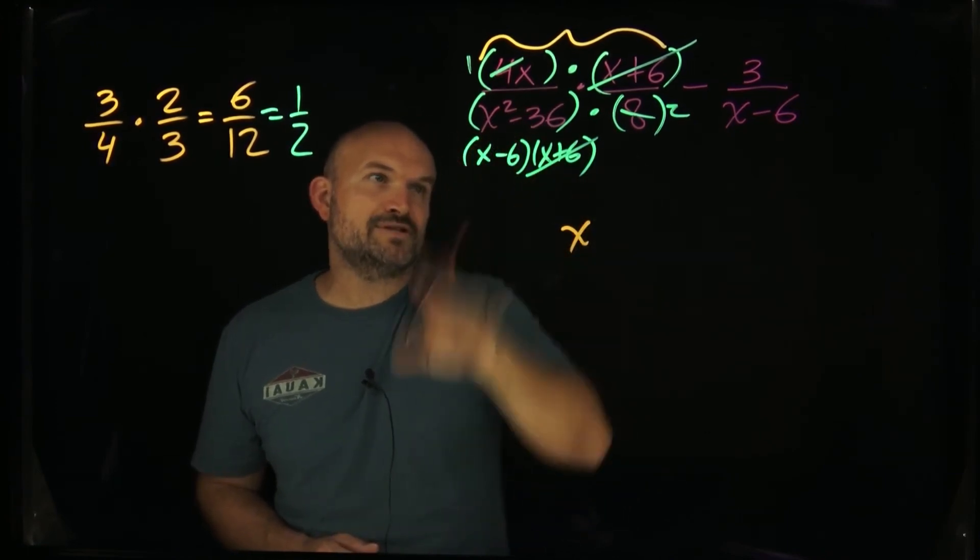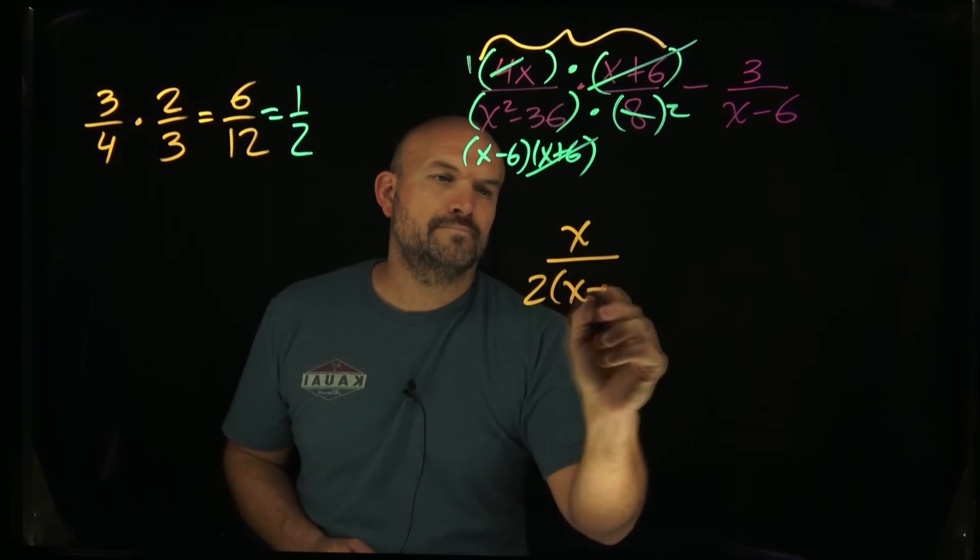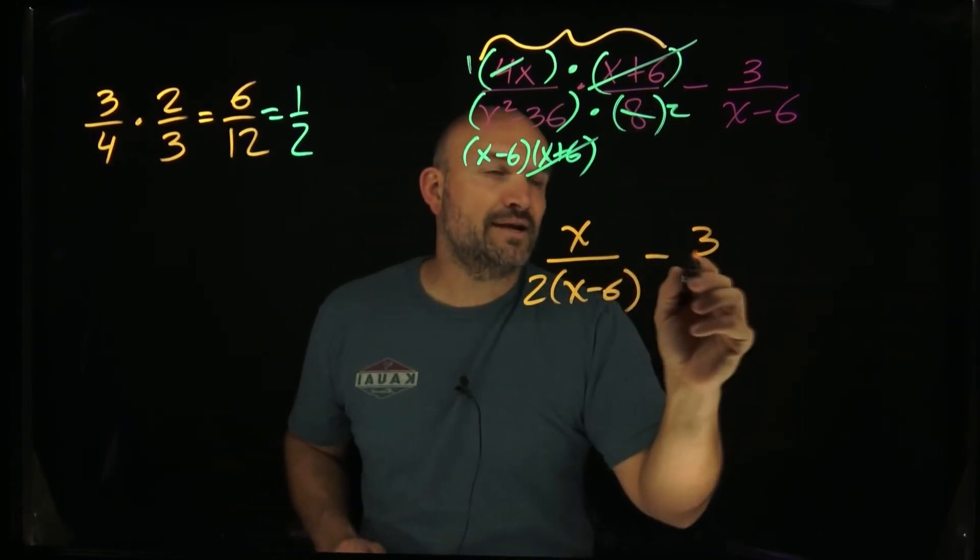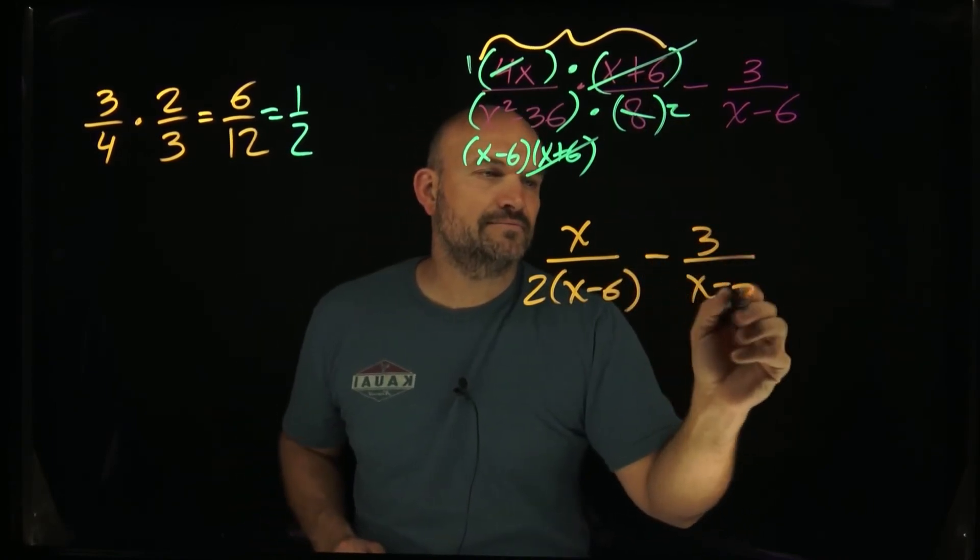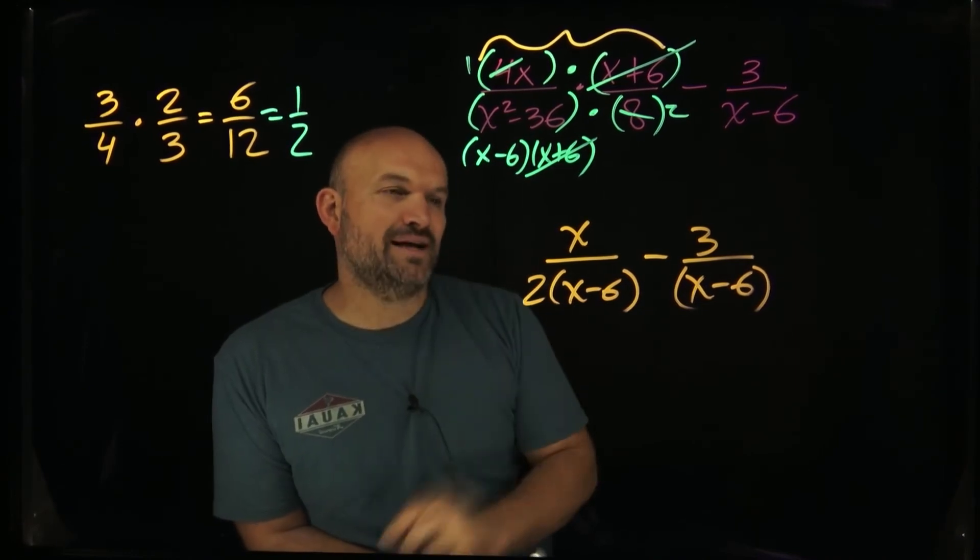And then in the denominator, I'm just going to have x minus 6 times 2. And therefore, that's going to be minus 3 times x minus 6. Now, it's really important that you recognize I put this x minus 6 in parentheses.